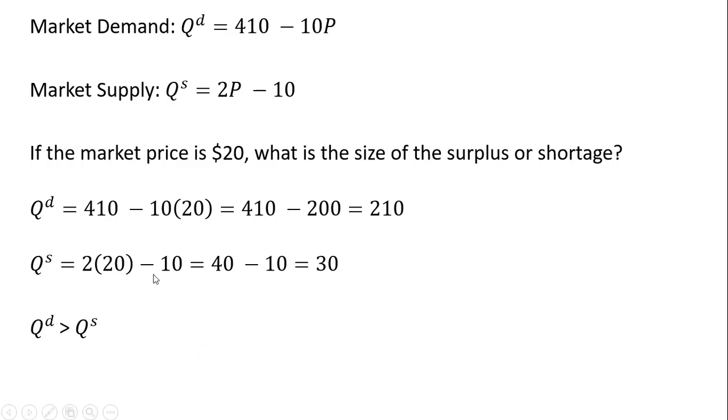In this example then, the amount that consumers want to buy exceeds the amount that sellers want to produce and offer for sale. This is the classic example of a shortage or excess demand. Quantity demanded exceeds quantity supplied. 210 is greater than 30. We can calculate the size of the shortage. Consumers are only going to be able to buy 30 units. They would like to buy 180 more, so that is going to be the shortage.